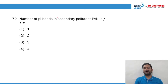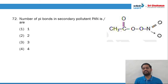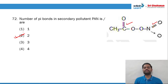Question 72: the number of pi bonds in the secondary pollutant PAN (peroxy acetyl nitrate). Looking at the structure, there are 2 pi bonds. So option number 2 is the right answer.